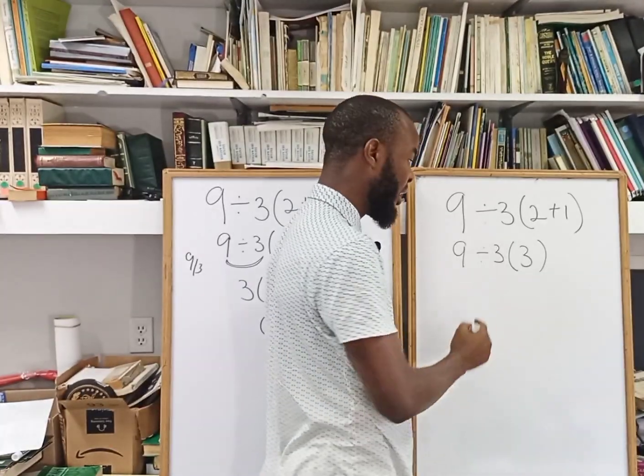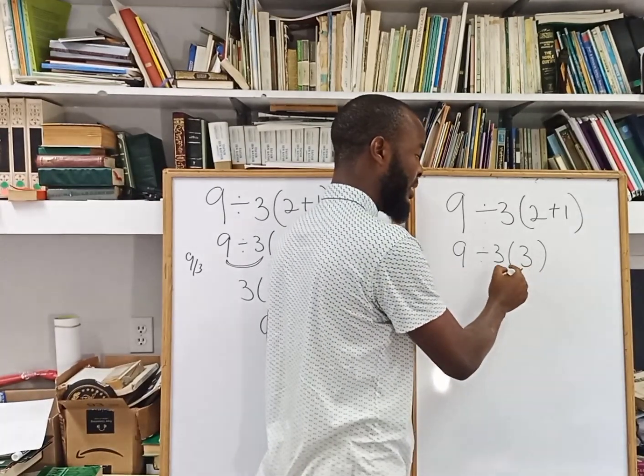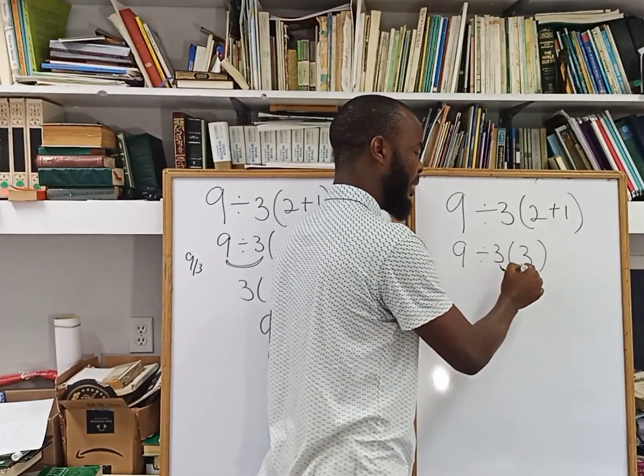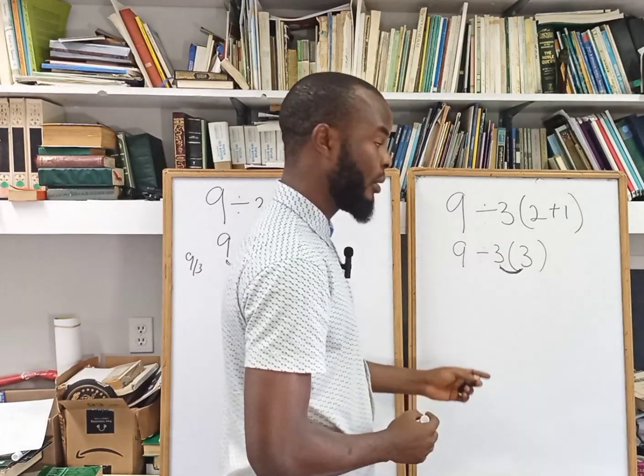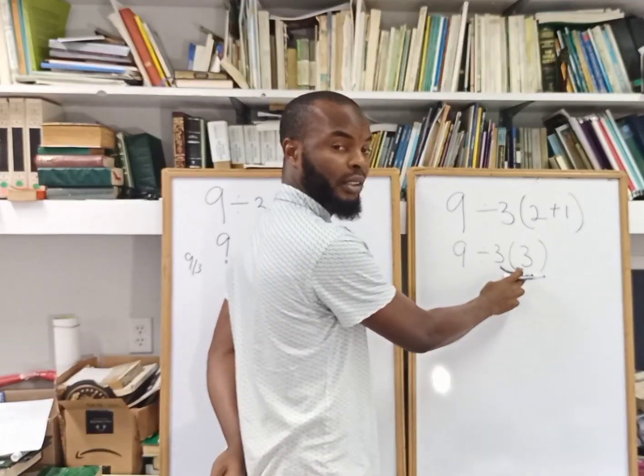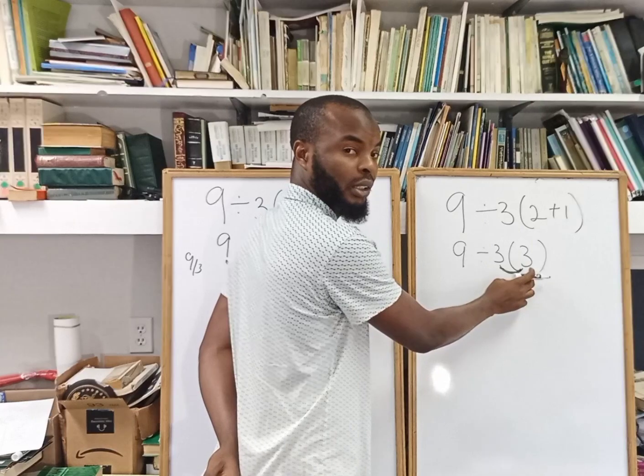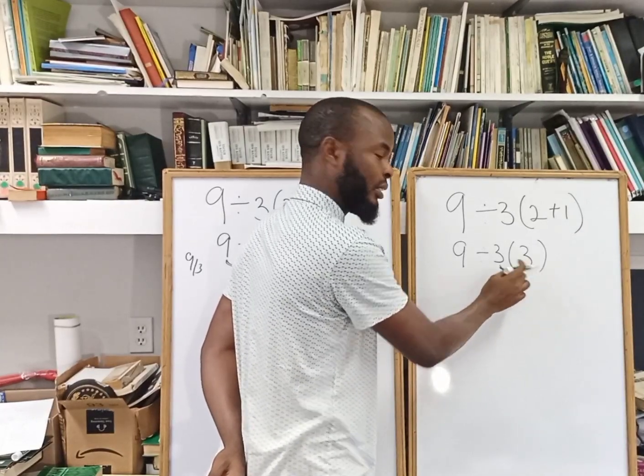You still believe that 3 and these parentheses shows that you are yet to finish with these parentheses, because you still have a value in the parentheses. This is not a product. This is just solving all the parentheses.